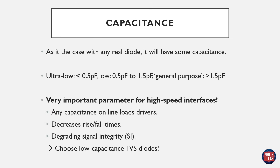Next we have capacitance. As with any real diode, a TVS diode will have some capacitance. For DC signals or low-speed signals such as I2C, this is of little importance. However, for high-speed interfaces this can be quite a problem. TI, for example, ranges its TVS diodes in three sections: ultra-low capacitance, which is less than 0.5 pF; low, from 0.5 to 1.5 pF; and general purpose, which is anything above 1.5 pF. Capacitance plays a huge role for high-speed interfaces, as any capacitance on the line will excessively load the drivers and decrease rise and fall times, causing signal integrity issues.